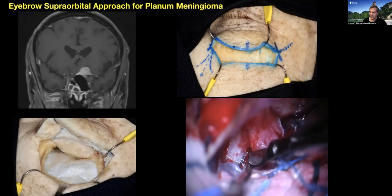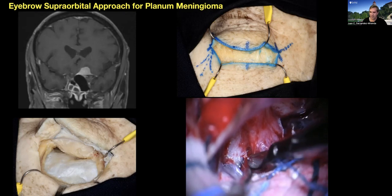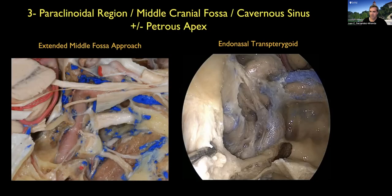The eyebrow incision is a modification of that frontal orbital exposure. Moving to a more challenging area — the paraclinoidal region, middle cranial fossa, cavernous sinus, with potential extension to the petrous apex — here we use the very powerful extended middle fossa approach with all its different variants.